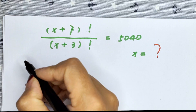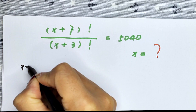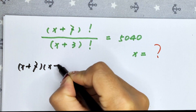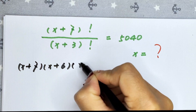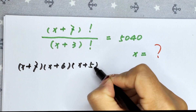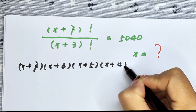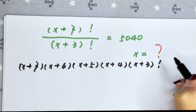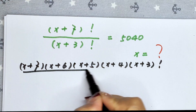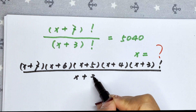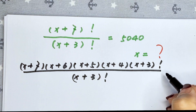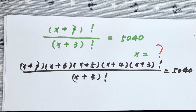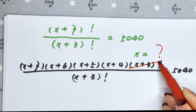In the numerator, we expand (x plus 7) factorial as x plus 7 times x plus 6 times x plus 5 times x plus 4 times (x plus 3) factorial, all over (x plus 3) factorial, equals 5,040.